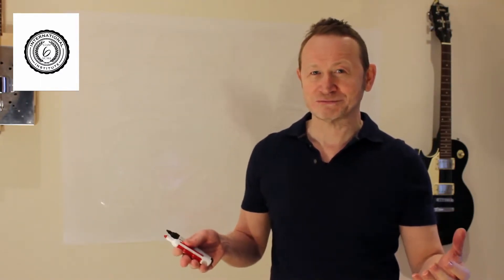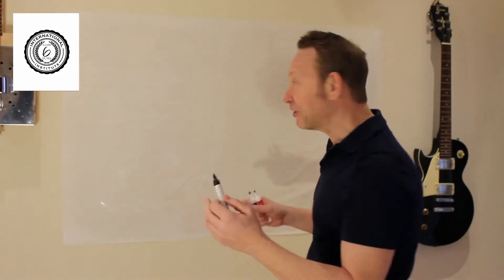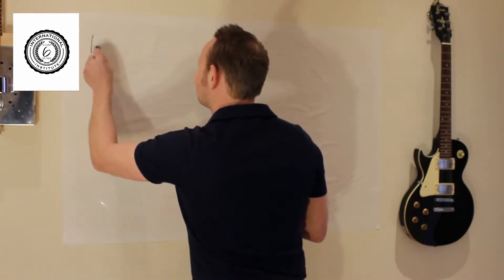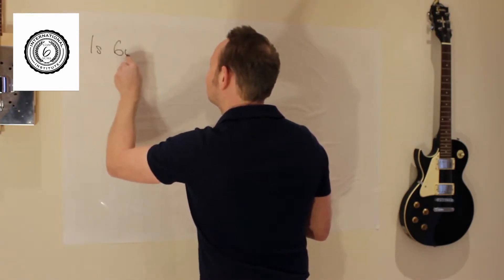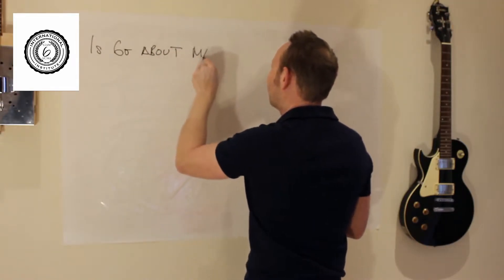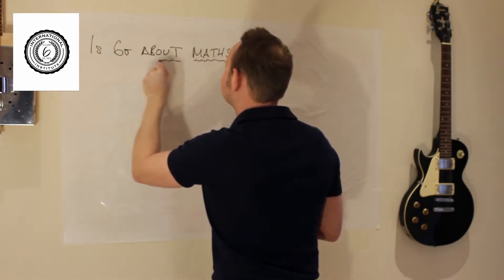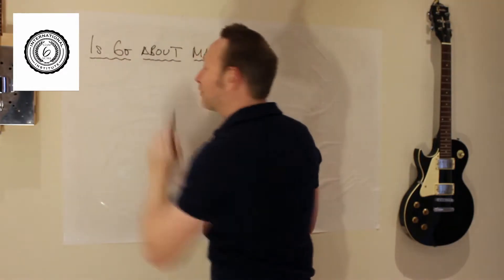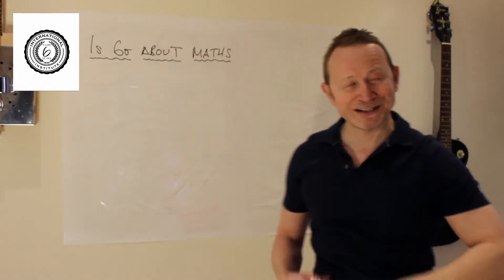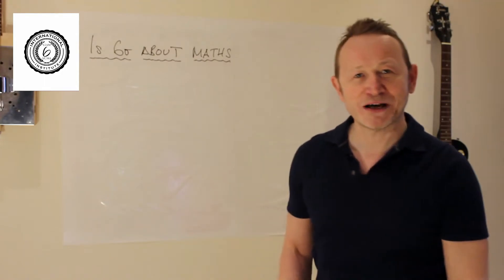And if it's not, what does the DMAIC cycle look like when it's not about mathematics? So we're going to use the DMAIC cycle to explain this. Is Six Sigma all about maths? Obviously the phrase Six Sigma, Sigma in itself is about standard deviation, so it kind of suggests it's all about mathematics.